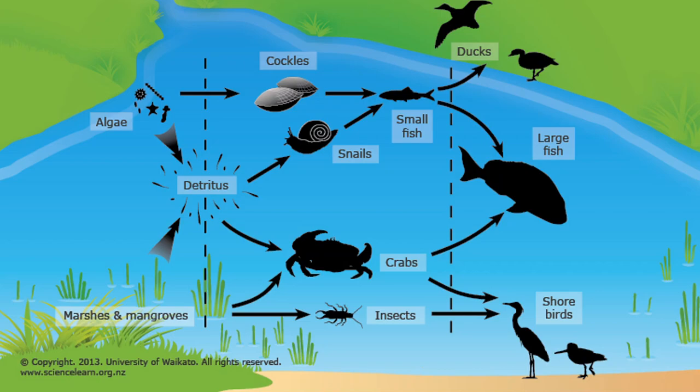Plants are also found in estuaries, but are comparatively less frequently preserved. Even when there isn't a true estuary, deltas are somewhat unique among depositional environments, in the sense that they contain marine life, freshwater organisms, and land biotas — organisms that live on the land.